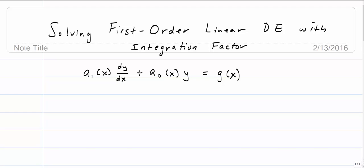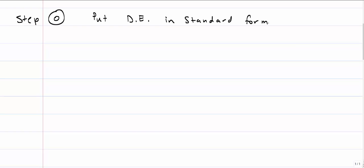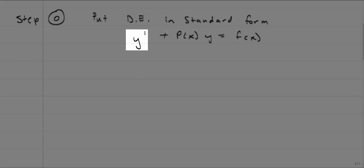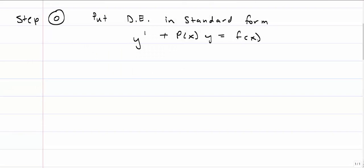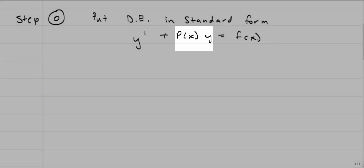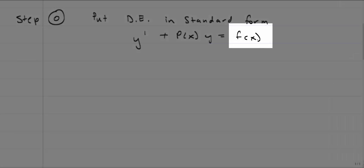I find it easier to lay out the steps, explain what we're going to do and why, and then go back and explain why it works. The first thing we're going to do — I'll call it step zero since we don't always have to do it — is to put the differential equation in standard form. Standard form is when the numerical coefficient in front of y-prime is equal to 1, so if there's anything in front of y-prime, you divide it out. We'll call anything multiplying y as P(x), and f(x) will be the right-hand side of the equation.